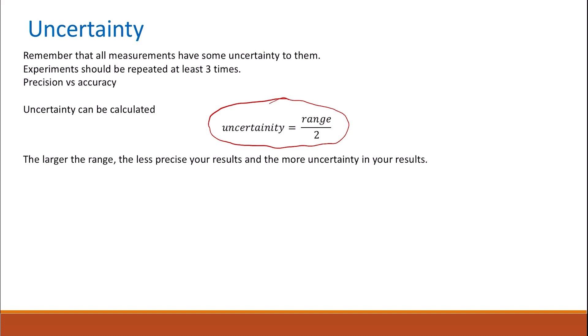When you report your uncertainty, you are saying that the value you are getting or the true value should be within that range of the value you have got. Uncertainty is shown with the symbol plus or minus.